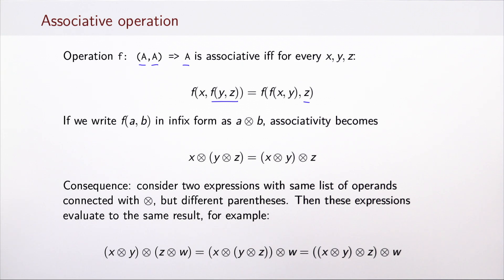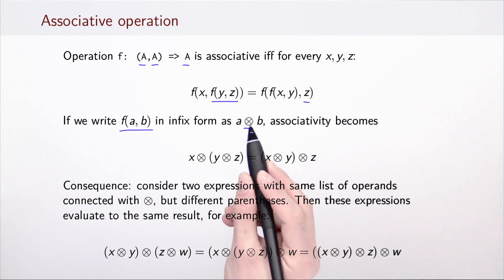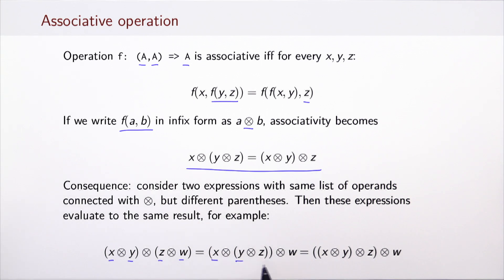It is sometimes more conventional to write the associativity law using an operator: writing f(a, b) as a ⊕ b, the law becomes (x ⊕ y) ⊕ z = x ⊕ (y ⊕ z). This tells us that two different orders of combining three elements in sequence yield the same value. As a consequence, if two expressions have the same list of operands connected with our associative operation but different parentheses, they evaluate to the same result. We must preserve the ordering of elements but can change where the parentheses are.